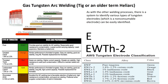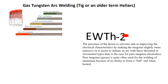The E stands for electrode; the W is the atomic symbol for tungsten; the TH is thorium; and the 2 is 2% thorium, which is red. The presence of thorium and zirconium improves the electrical characteristics by making the tungsten slightly more emissive. It is easier to ignite an arc with the thorium and zirconium types than with pure tungsten electrodes. Pure tungsten electrodes, which are green, are quite often used for welding aluminum because of their ability to form a ball when heated.